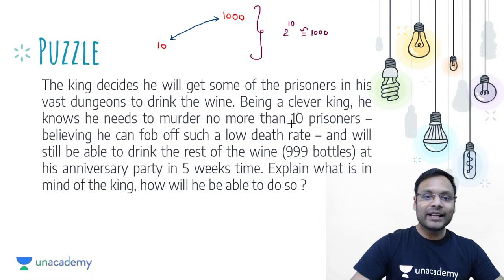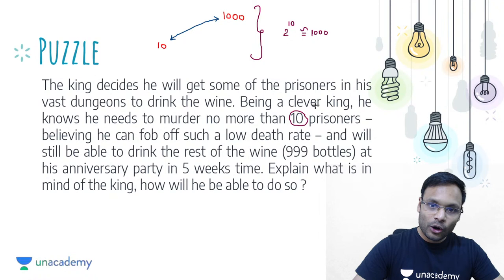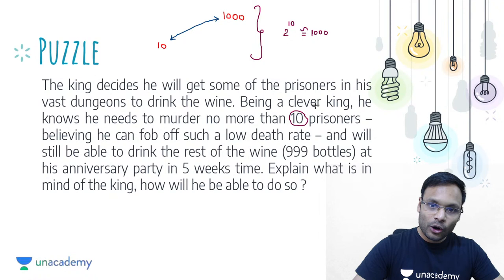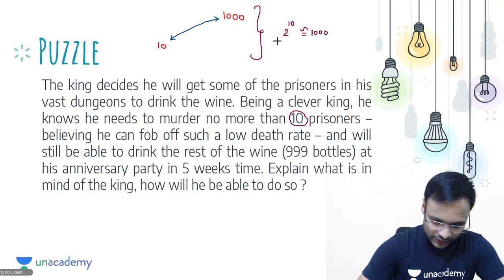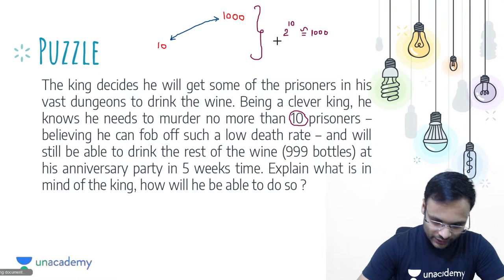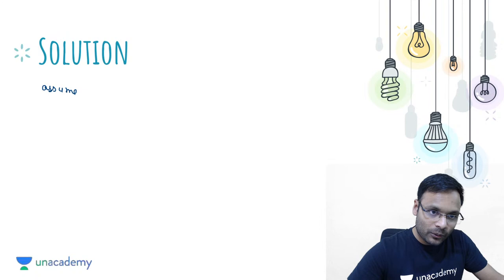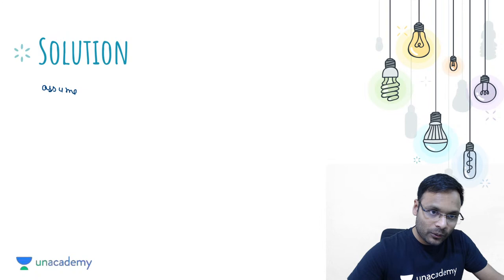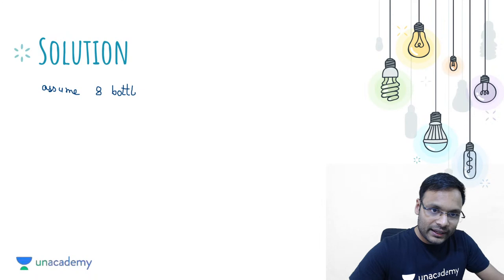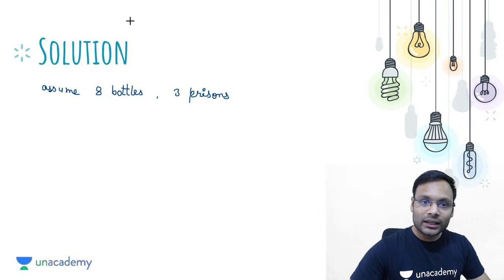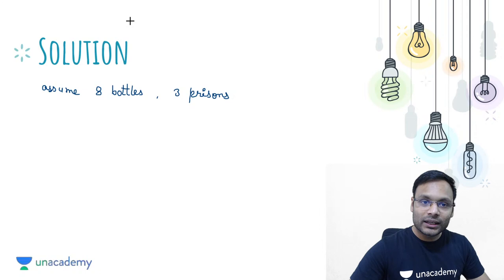You know binary — yes or no? The basic preliminary analysis says 2 to the power 10 is almost equivalent to 1000. So some kind of binary logic we'll have to use here. Let's understand with a small example first. Let's assume you have only 8 bottles and you have 3 prisoners — 2 to the power 3 equals 8, just as 2 to the power 10 equals almost 1000.